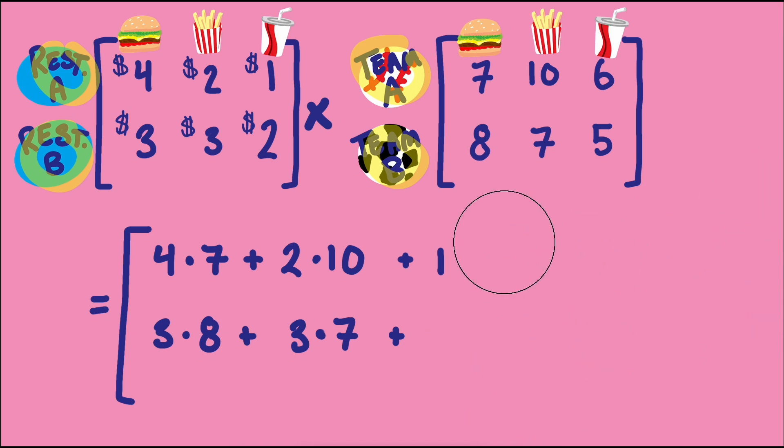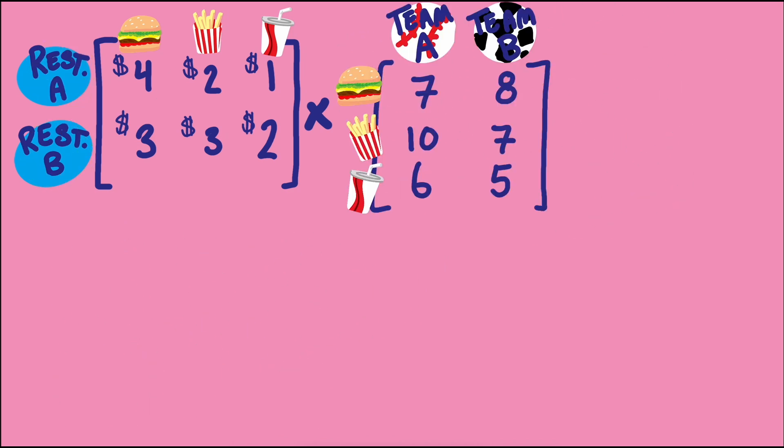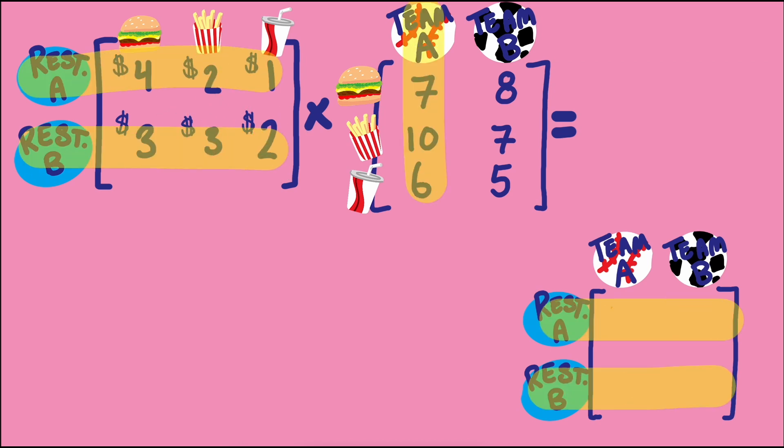The way mathematicians have fixed both of these problems is to transpose one of the matrices. The first matrix then has the row labels for the total amount matrix. The second matrix then has the column labels for the total amount matrix.